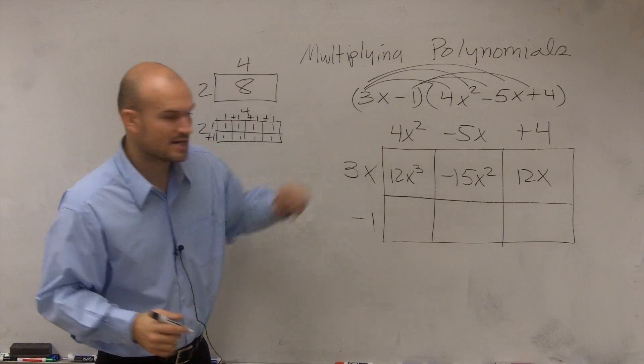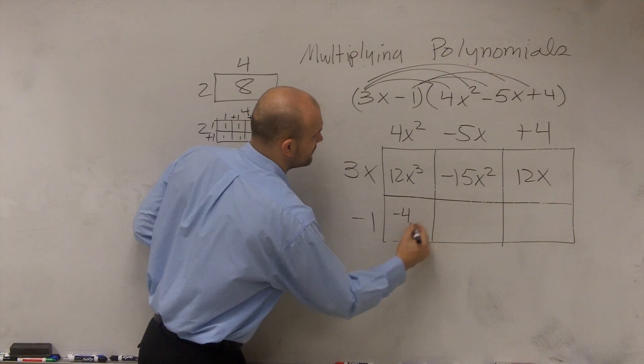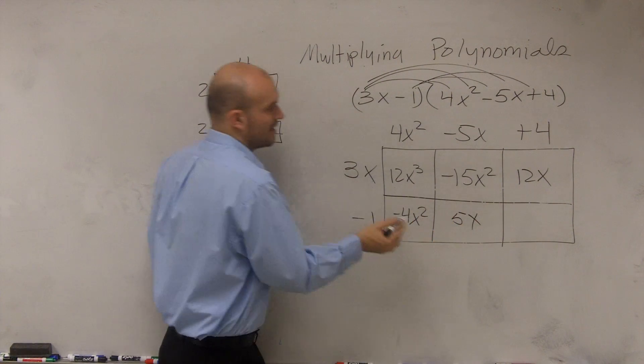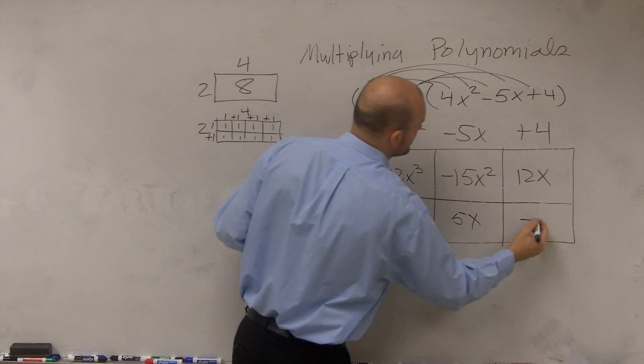Negative 1 times 4x squared is negative 4x squared, negative 1 times negative 5x is 5x, and negative 1 times positive 4 is a negative 4.